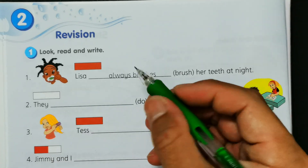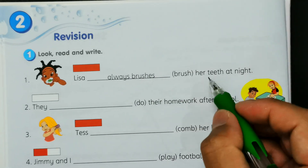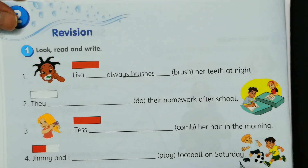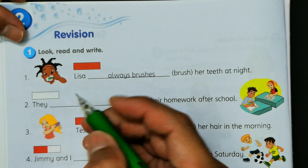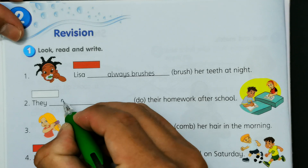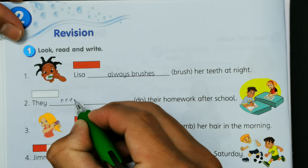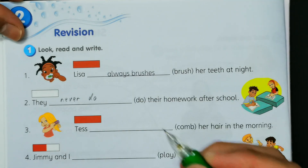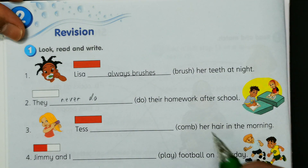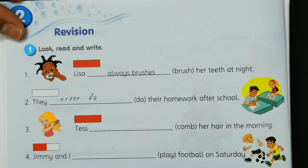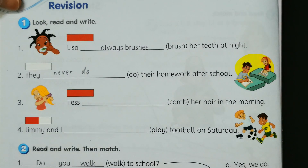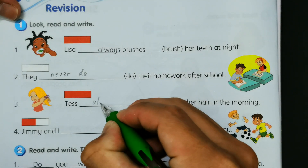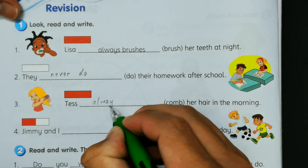So number one, give an example: Lisa always brushes her teeth at night. And then number two — this is 'never' — they never do their homework after school.